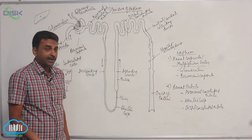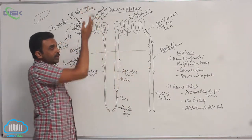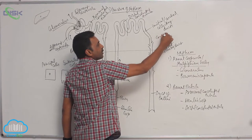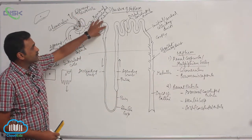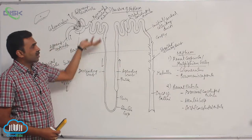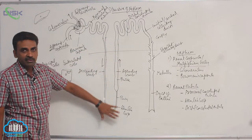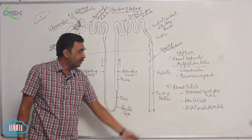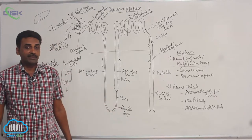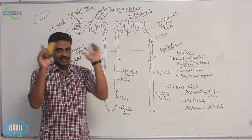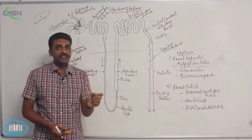The duct of Bellini is also called the papillary duct because it opens at the papilla. The renal corpuscle, proximal and distal convoluted tubules, and the initial collecting ducts are all present inside the cortex. The descending and ascending limbs of Henle's loop, the straight collecting ducts, and the duct of Bellini are present inside the medulla.